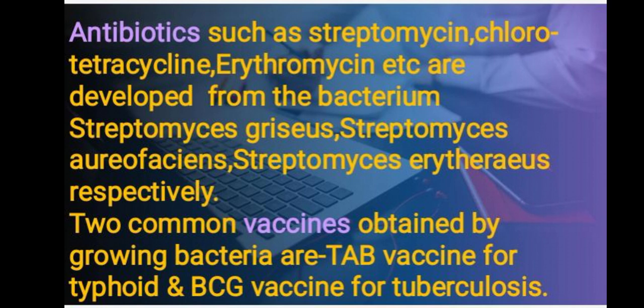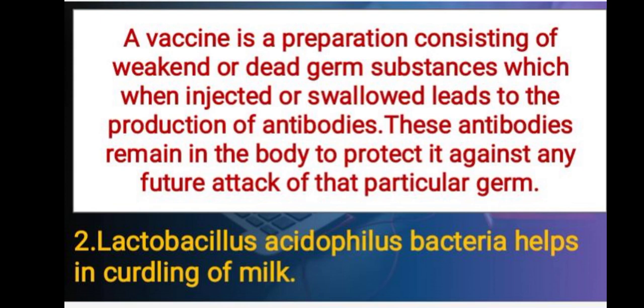Two common vaccines obtained by growing bacteria are the TAB vaccine, which is used for typhoid, and the BCG vaccine, used for tuberculosis. A vaccine is a preparation consisting of weakened or dead germ substances which, when injected or swallowed, leads to the production of antibodies. These antibodies remain in the body to protect it against any future attack of that particular germ.